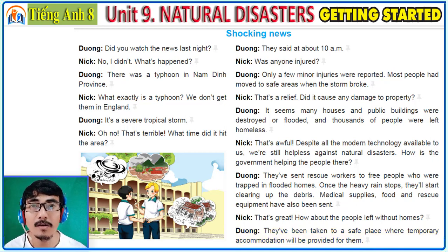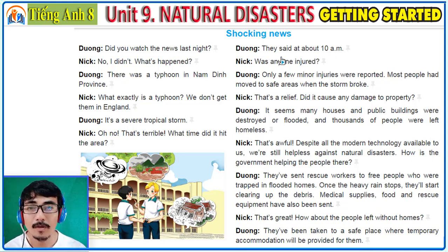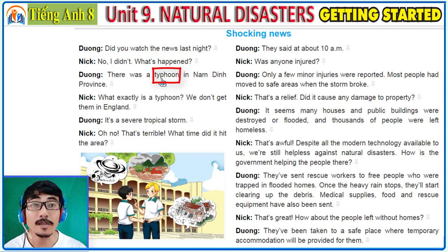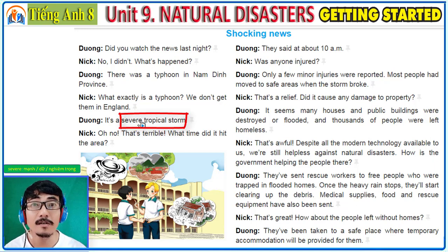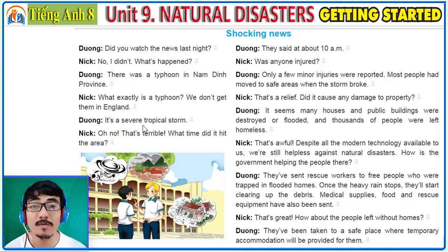Now let's explore the vocabulary. A typhoon is a strong, severe tropical storm — a violent severe tropical storm.